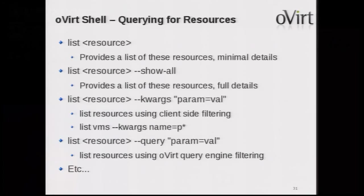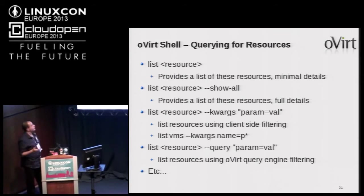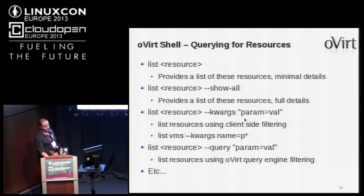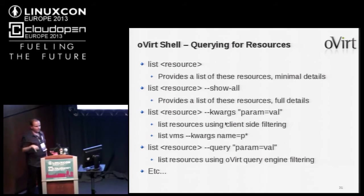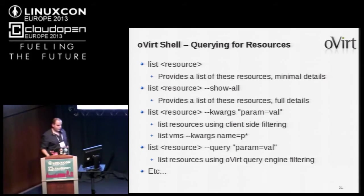There are more examples in the slides. When listing a specific collection like VMs, you can choose to show all properties. You can filter them using a client-side query — the CLI gets all information and does filtering on the client — or send the query to the oVirt engine to filter objects server-side.